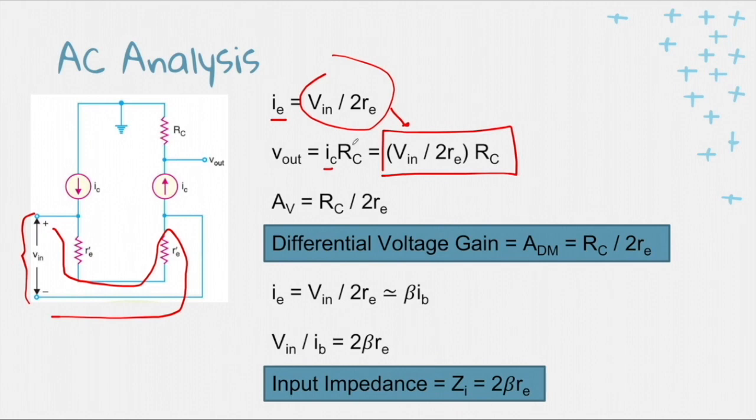Now, to get the gain, the differential voltage gain, we have to get the ratio of Vout over Vin. And we are left here with RC over 2re. So this is now the equation of the differential voltage gain. That's RC over 2re.